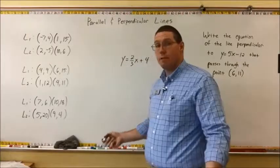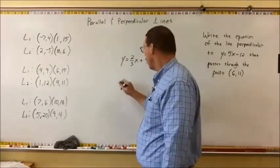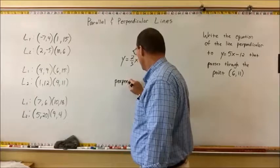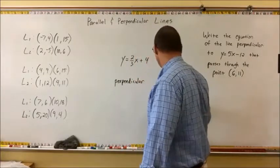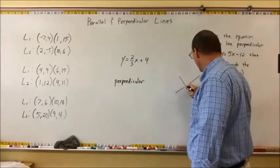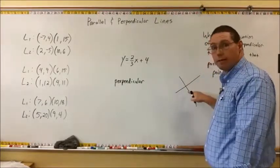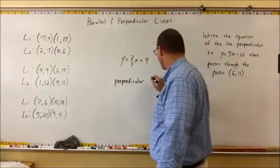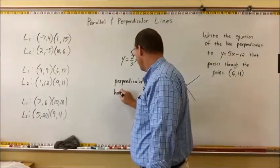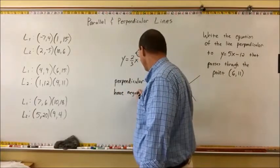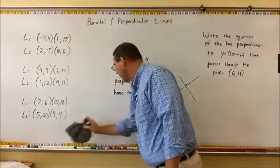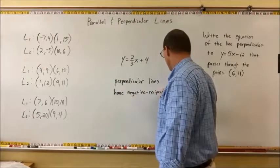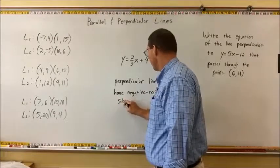Now let's talk about perpendicular lines. Perpendicular means forming a 90-degree angle. So when two lines intersect and create a 90-degree angle, they are perpendicular. Perpendicular lines have negative reciprocal slopes.